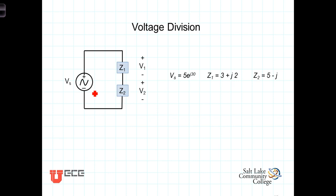So, for example, we have V1 equals Vs times Z1 over Z1 plus Z2. And that would be the voltage across this impedance. And V2 is equal to Vs times Z2 over Z1 plus Z2.